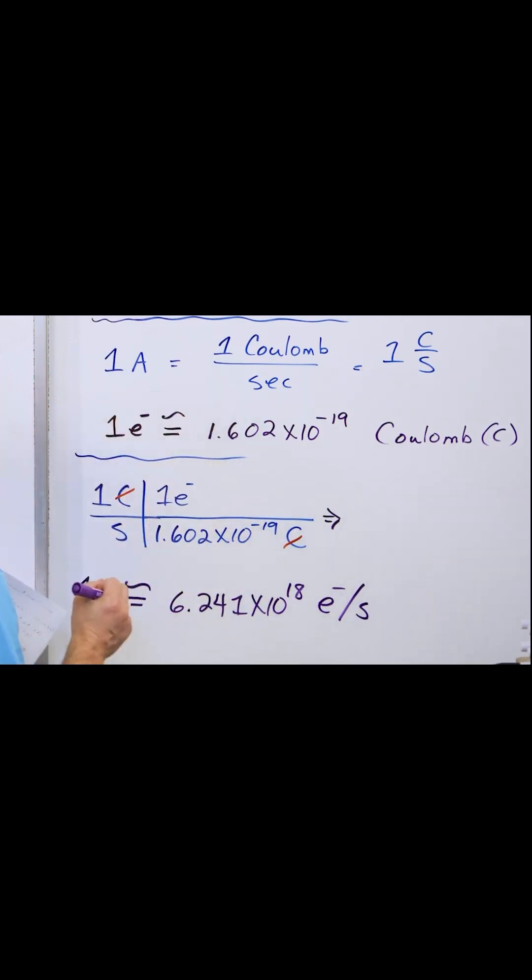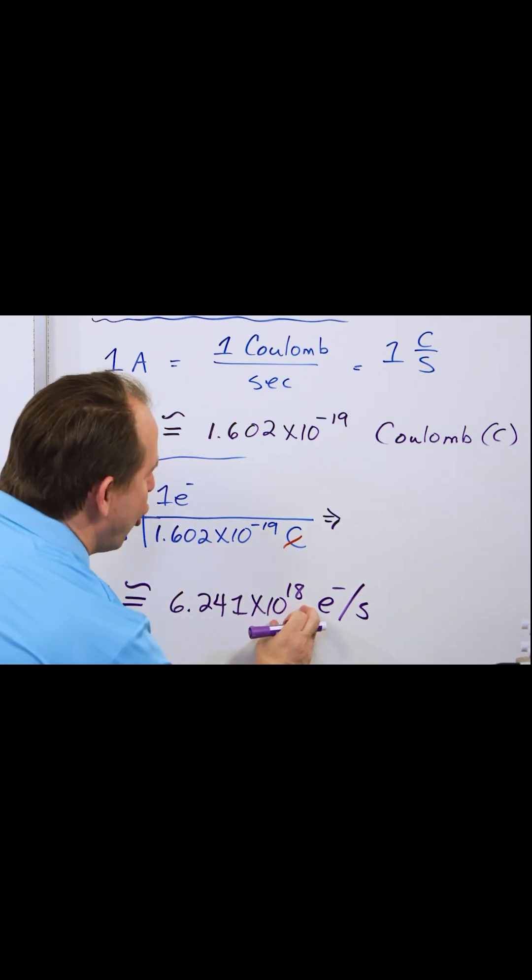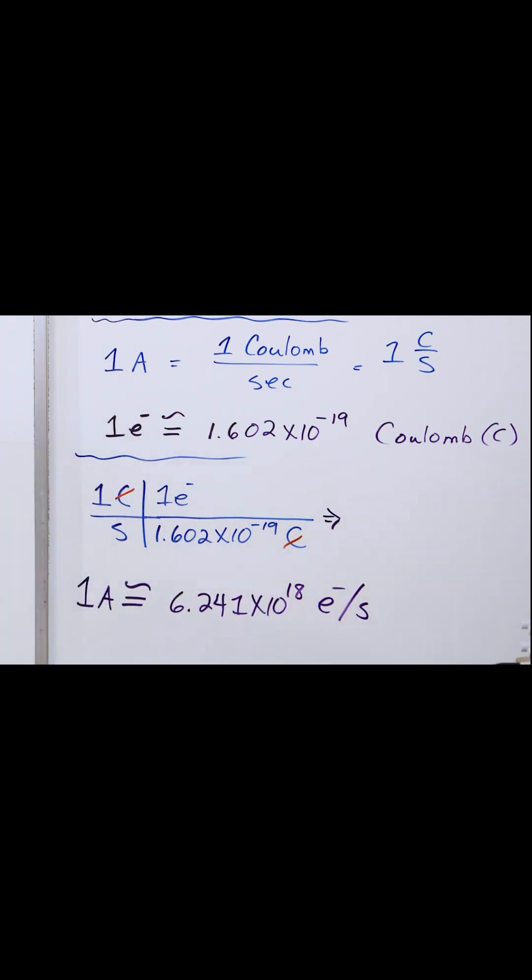And when you put those two pieces of information together and the units cancel out, what you're saying is that one amp, which is a coulomb per second, is equal to this many electrons flowing by per second. And it's an enormous amount of electrons flowing by every second.